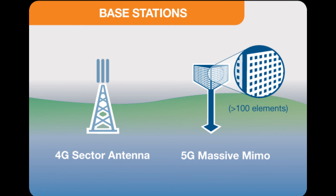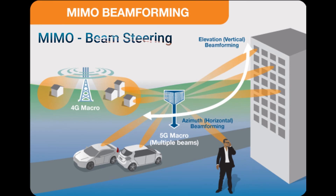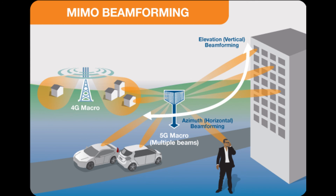5G user equipment, including mobile phones and devices, will also have MIMO antenna technology built into the device for the millimeter wave frequencies. Beam steering is a technology that allows the massive MIMO base station antennas to direct the radio signal to the users and devices rather than in all directions. The beam steering technology uses advanced signal processing algorithms to determine the best path for the radio signal to reach the user.